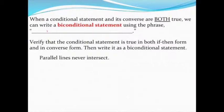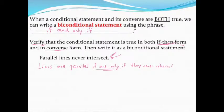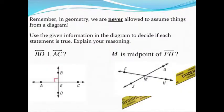One more type is the biconditional statement, which always contains the phrase 'if and only if.' Take 'parallel lines never intersect.' First verify both the if-then form — 'if lines are parallel, then they never intersect' (true) — and the converse — 'if lines never intersect, then they are parallel' (true). Because both are verified, we can write the biconditional: 'lines are parallel if and only if they never intersect.'